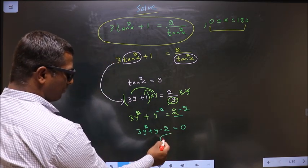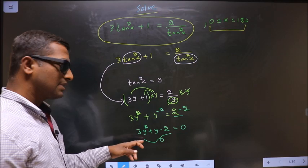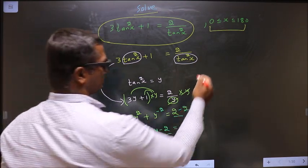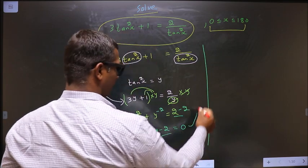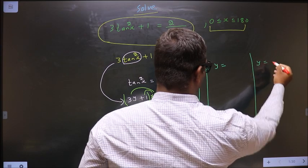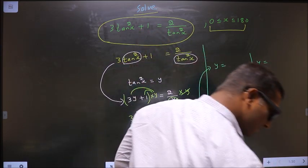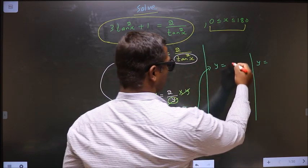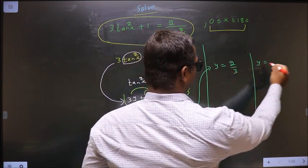Now we got quadratic. Place this in the calculator to get the values for y. So you get y values to be 2 by 3 and minus 1.